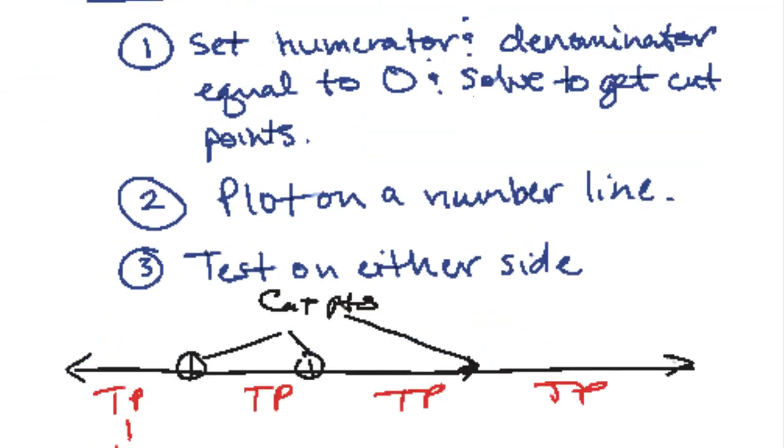So either way, if we have a fraction and inequality, we set the top, the numerator equal to 0 and the denominator equal to 0, solve and get our cut points. We plot these points on the number line. Open dot means not including and if there was no equal sign, close dot would include it.